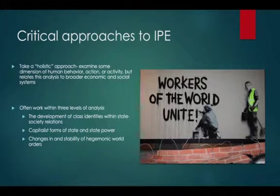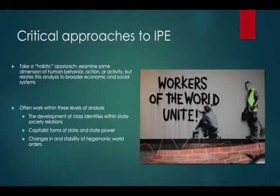First, some critical IPE scholars look at the development of class identities within various state-society relations. Critical IPE views class identity as emerging within and through particular context and historical processes of economic production and exploitation. Many scholars examine how various classes create political associations, form institutions or organizations such as labor unions or social movements, and how these different institutions promote or inhibit different class demographics from making claims or assertions of autonomy within existing social relations of production.